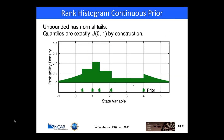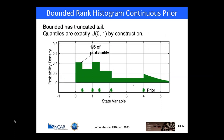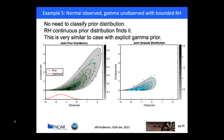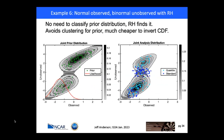By construction, the quantiles of the rank histogram distribution are uniform on zero-one. You can also bound it: if bounded below at zero (e.g., a tracer concentration), change from a normal tail to a bounded tail at zero to obey the bounds. Going back to the gamma-normal example, now without making any explicit distributional assumptions and just using the rank histogram prior, I still obey the bounds by definition and get a distribution very similar to what I obtained with the gamma assumption. Similarly, for the normal-binormal example using the rank histogram prior, the cyan results are again very similar. This is a powerful nonparametric method.